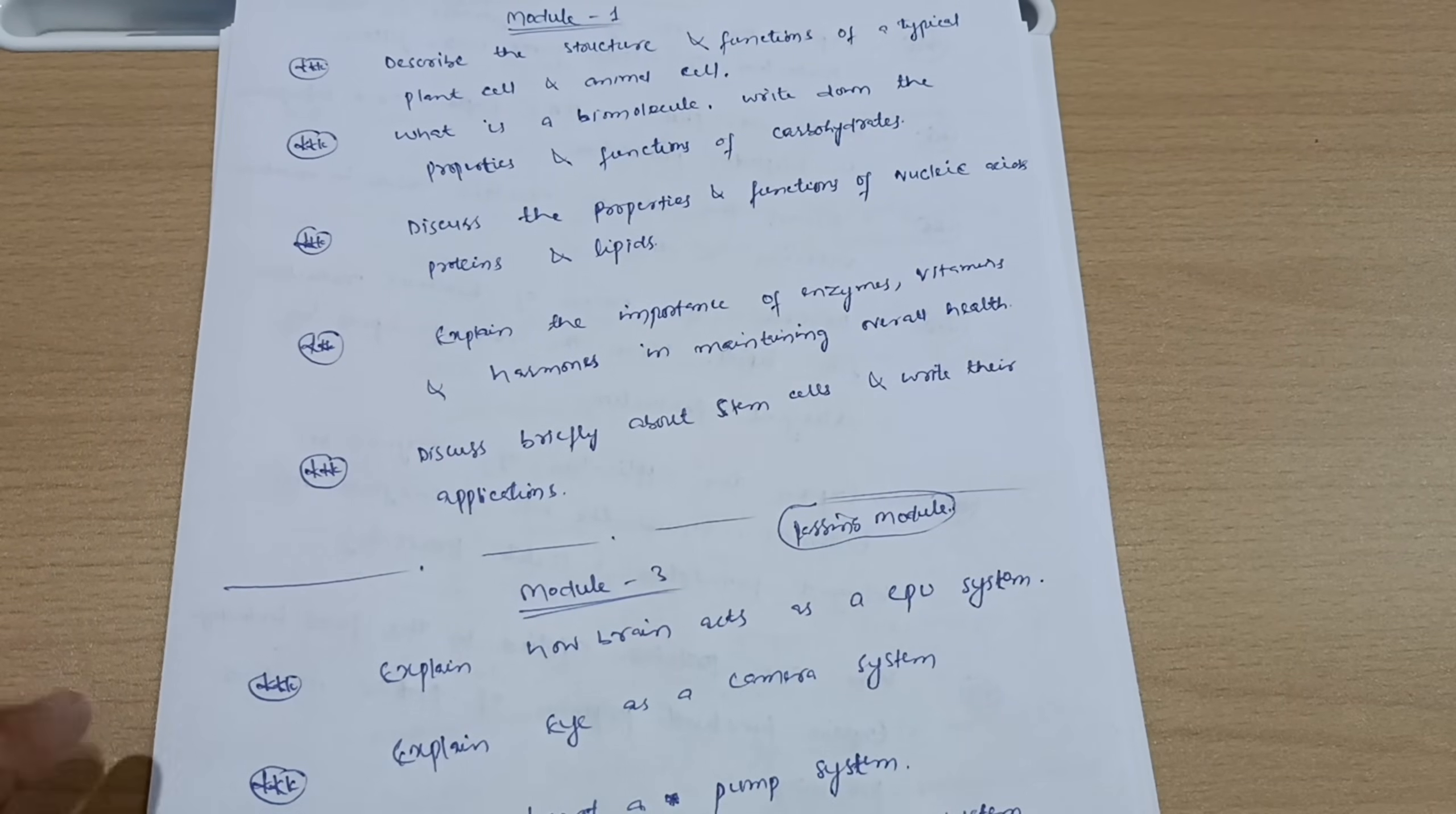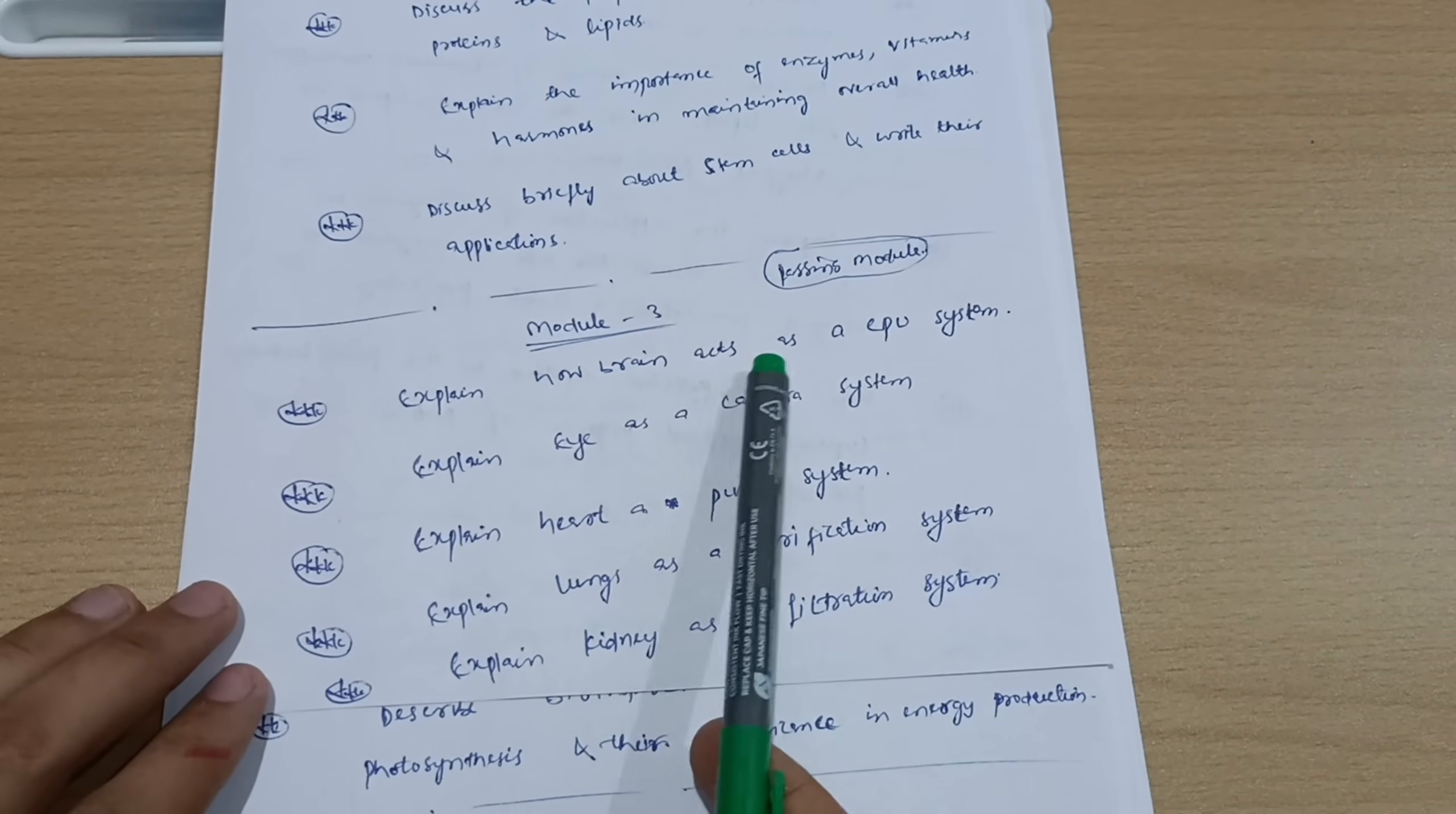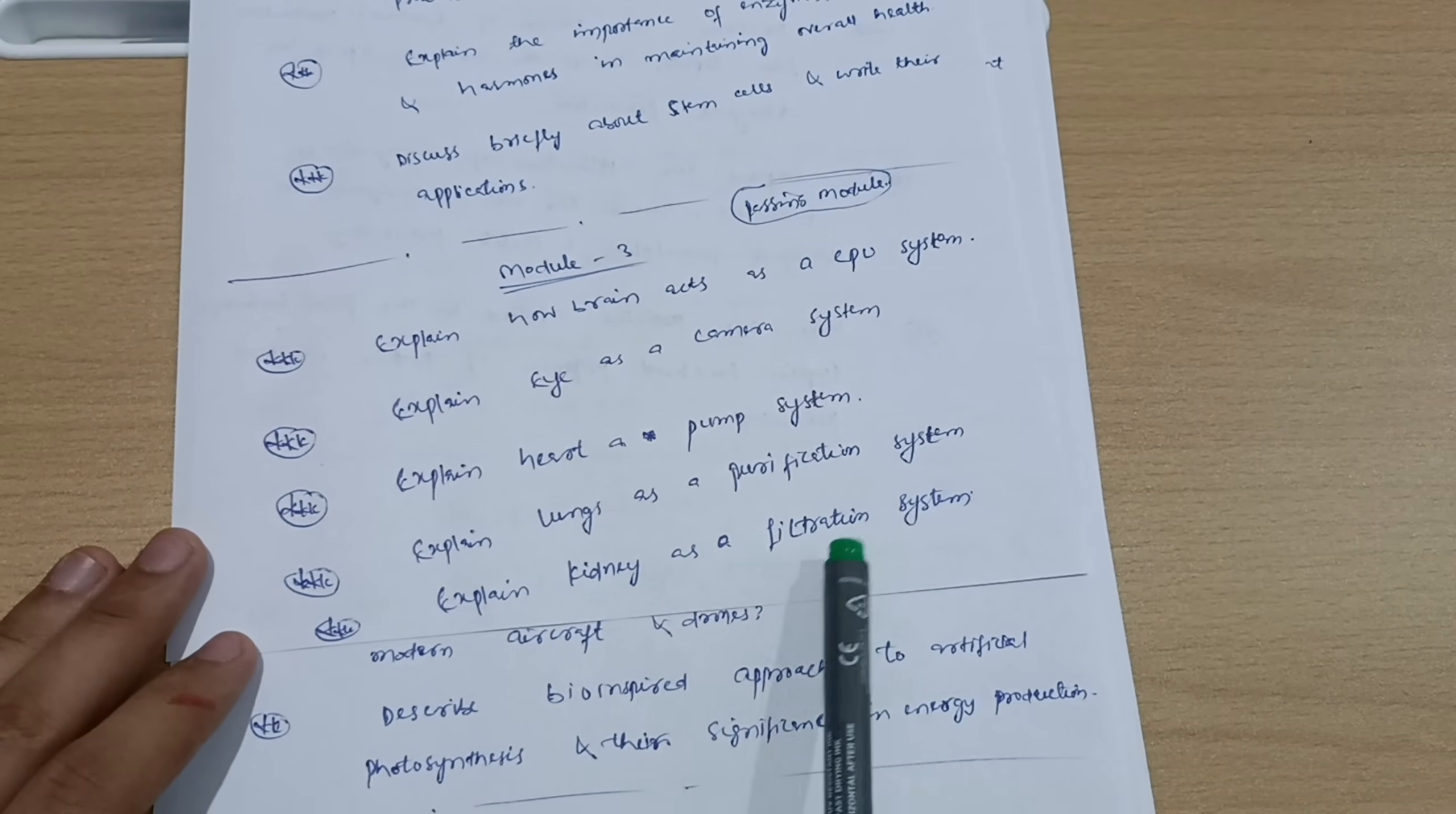Next is Module 3. These 20 marks are in your pocket, my dear friends—these are fixed questions. So Module 3: explain how brain acts as a CPU system, explain eye as a camera system, explain heart as a pump system.